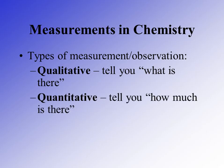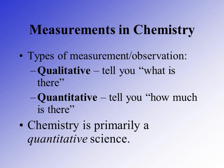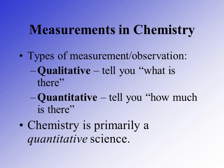And there are quantitative observations. These are observations or measurements that tell you how much of something is there. They involve a number and a unit of measure. We are interested in describing qualities present in a substance or reaction, but we are more so concerned with the quantitative analysis. Not just is heat given off, but how much heat? Not just that we need oxygen and hydrogen to make water, but how much of each.